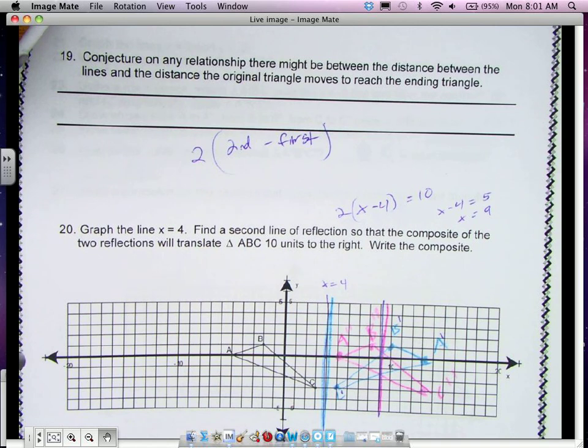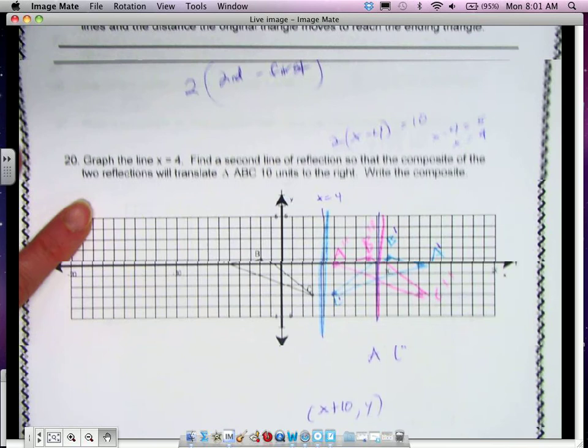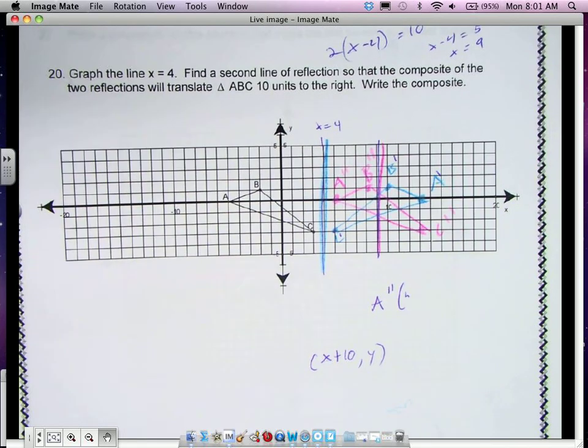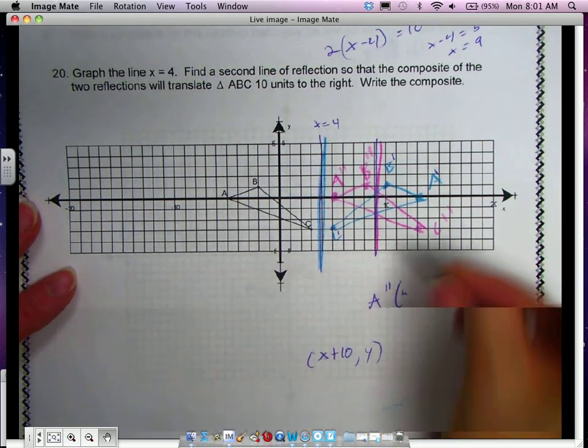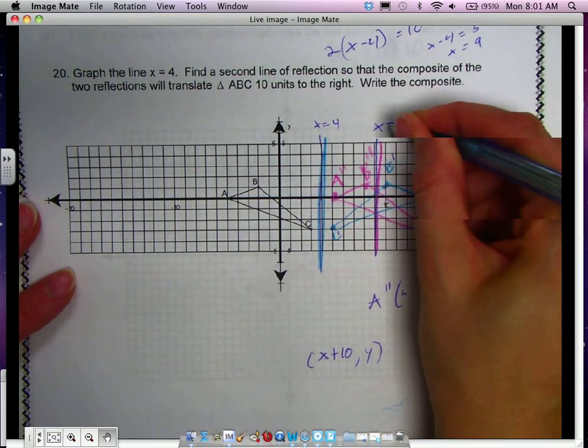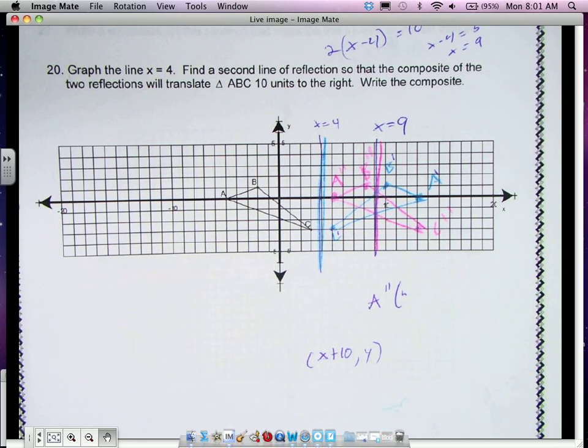So we tried it where we had this problem. We said, okay, what are some possible answers we could get if we've got x equals 4 and we want it to move 10 units to the right? I have x equals 9. Does anybody have a different answer besides that? There is another answer. Yes, Tasia? I have 1 and 4. You had 1 and 4?